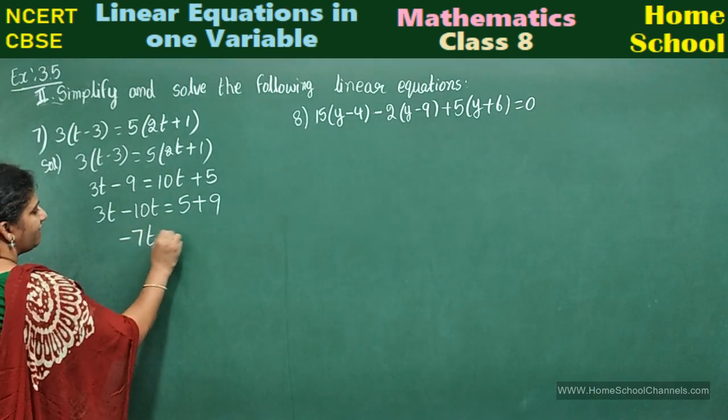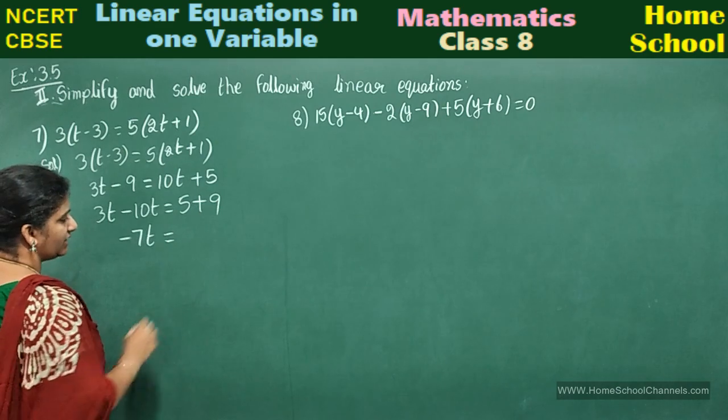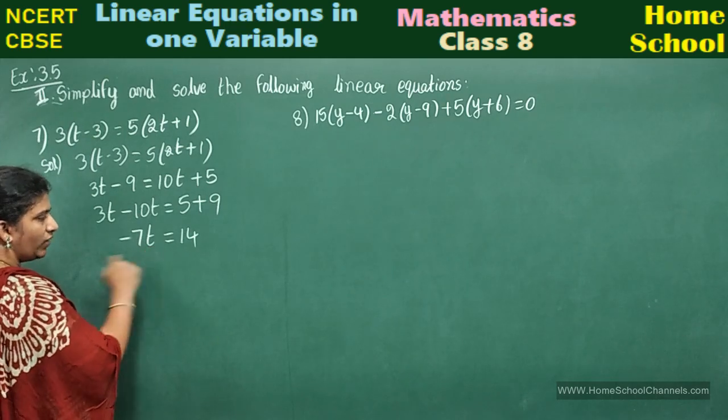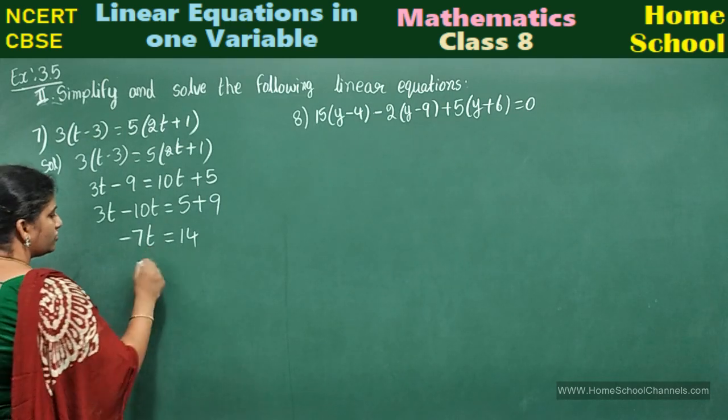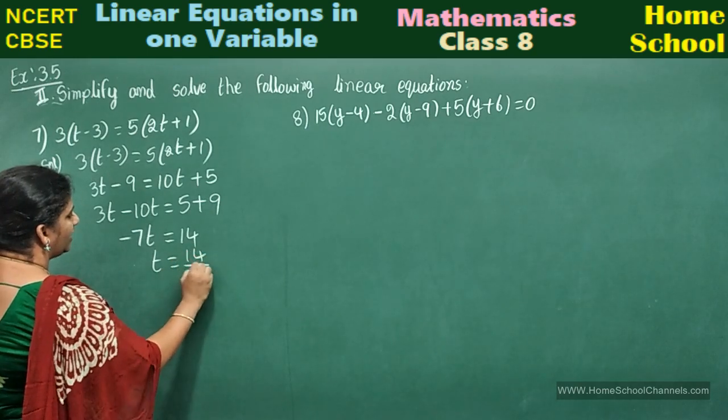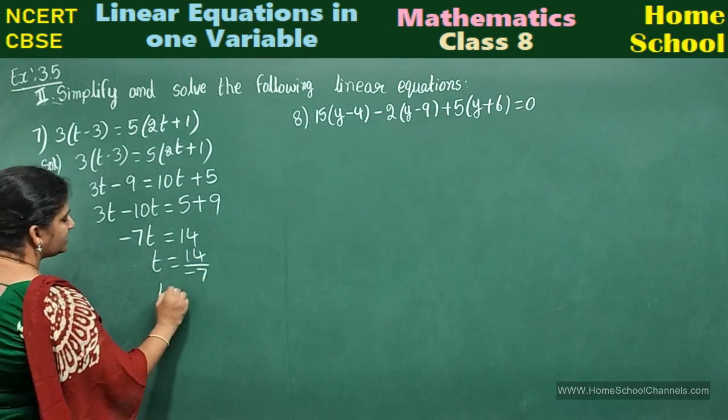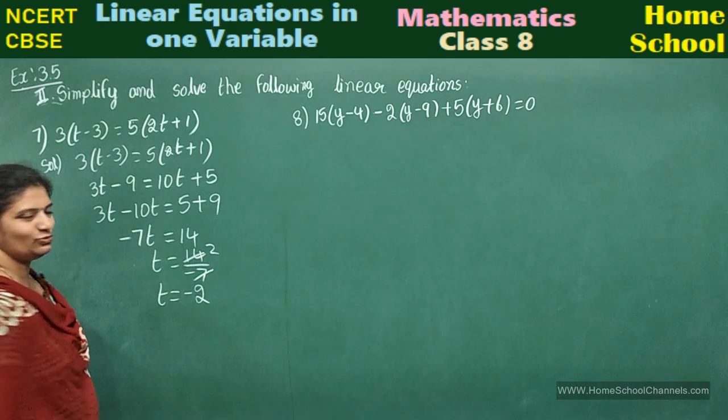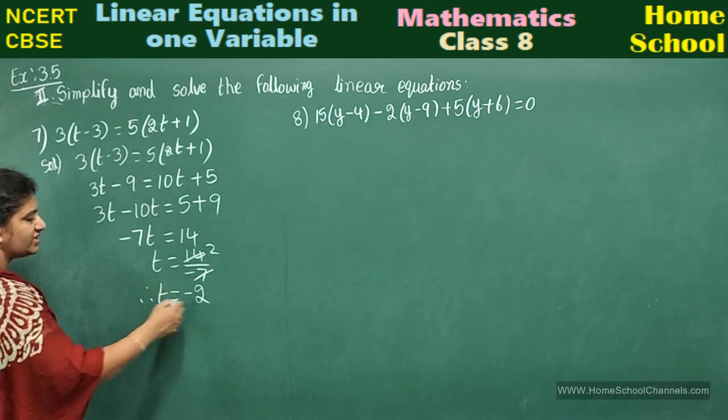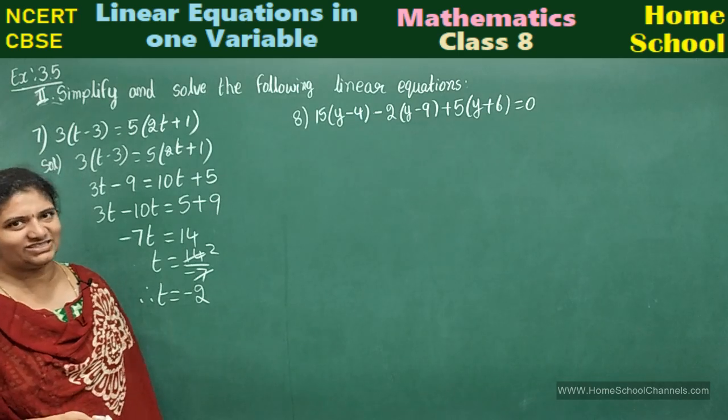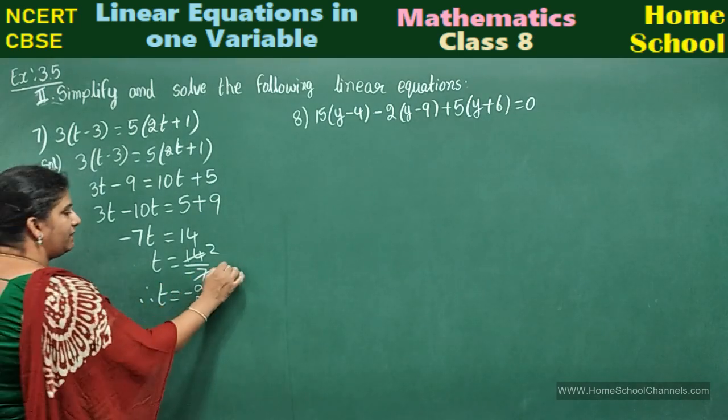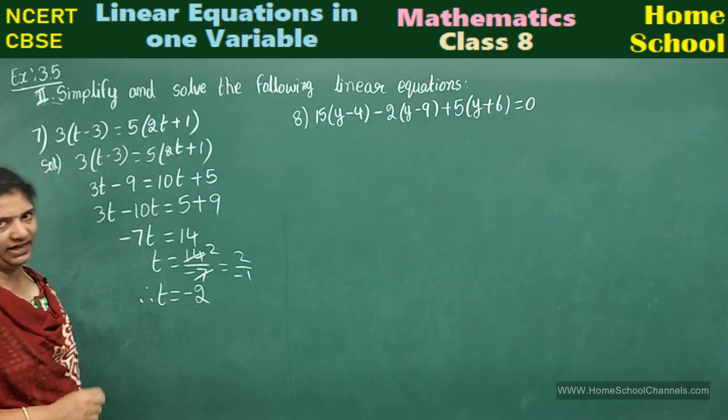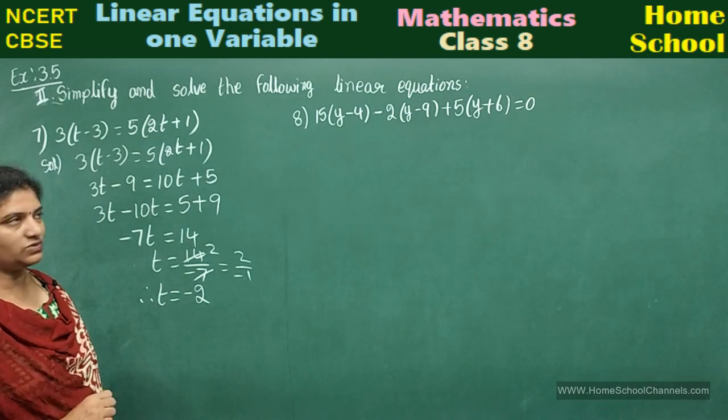5 plus 9 will be 14. Minus 7t, you have other than variable. What is extra? Minus 7 is extra, so transpose to the other side. t equals 14 by minus 7. t equals 7 twos are 14, 2 by minus 1 is nothing but minus 2. Therefore, what is the value of t? t equals minus 2.